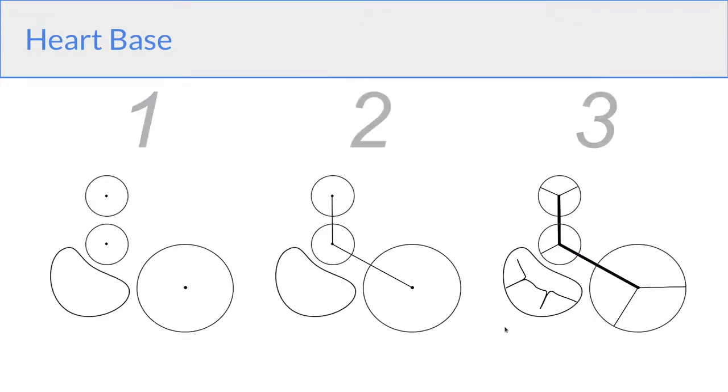So again, here are the three steps. So first we draw the three circles in the jelly bean, we mark the centers of the circles, we connect those centers, and then we divide into thirds.